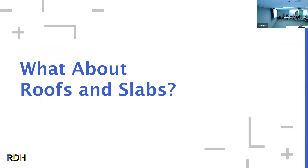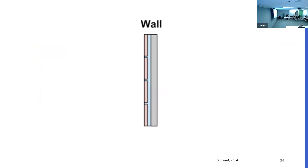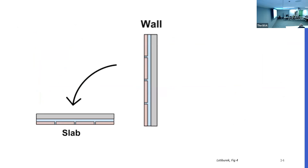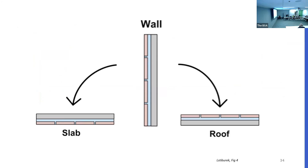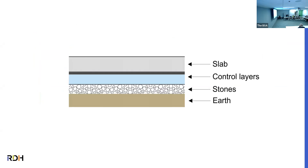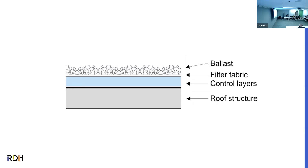Now that we've talked about the perfect wall, we want to connect our enclosure and talk about roofs and slabs. Take your vertical wall, turn it on its side and you have a slab; turn it upside down and you get a roof. Here's a section cut of a slab detail — you can see if you tilt it back up, you have the same similar elements as your perfect wall. The earth and stones or drainage mat act as your water-shedding surface, with control layers continuous exterior of your structure. For the roof, we have the roof structure with control layers above it, and cladding, ballast, or filter fabric exterior of all of that.